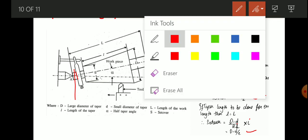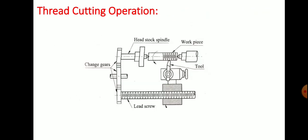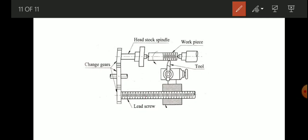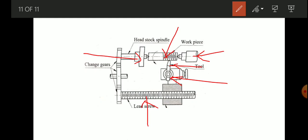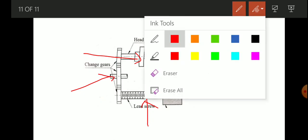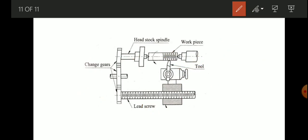Now let us move on to thread cutting operation. Here we can see a simple sketch of thread cutting, which consists of a tool post where the tool is held. The workpiece, onto which thread cutting is to be done, is supported by a tailstock at one end and the headstock at the other, and the rotation is controlled by gears. Thread cutting is used to produce helical grooves on the cylindrical workpiece by feeding the tool longitudinally while the workpiece revolves between centers or the chuck.